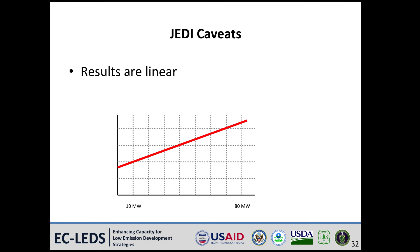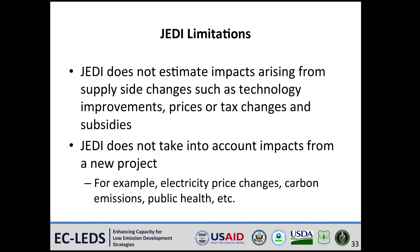Conversely, if you have one plant that is 10 megawatts and want to model an 80-megawatt system instead, you can either change the inputs or just multiply the results by 8. Next, iJEDI results provide a snapshot in time. In reality, new renewable energy plants may have market and policy impacts. For example, as the market for renewable energy expands in a region, the supply chain may become more efficient and prices may decline. JEDI results are static and do not reflect policy or market impacts.